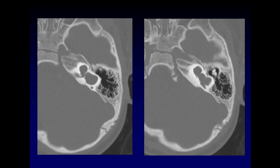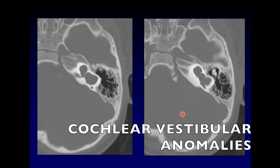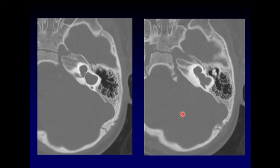Next, we have cochlear vestibular anomalies. Now it's not just a big blob — you can tell where the cochlea might have formed, and you can tell where the vestibule and semicircular canals might have formed. You can even make out a vestibular aqueduct there, but there's no fine detail. So there's a whole spectrum of abnormalities here that we call cochlear vestibular anomalies, where it's not quite as bad as a common cavity and not quite as good as Mondini's triad.